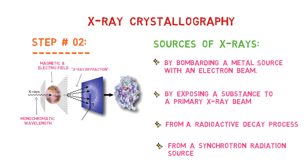As the crystal is gradually rotated, previous reflections disappear and new ones appear. The intensity of every spot is recorded at every orientation of the crystal. Multiple data sets may have to be collected, with each set covering slightly more than half a full rotation of the crystal and typically containing tens of thousands of reflections.